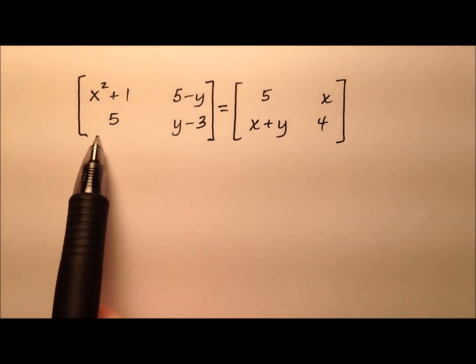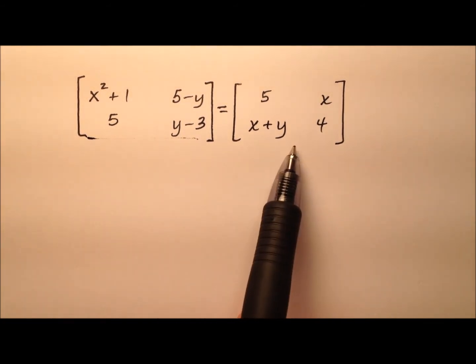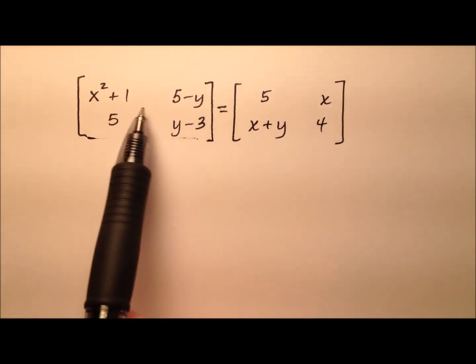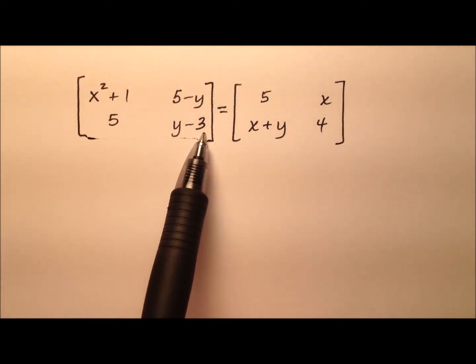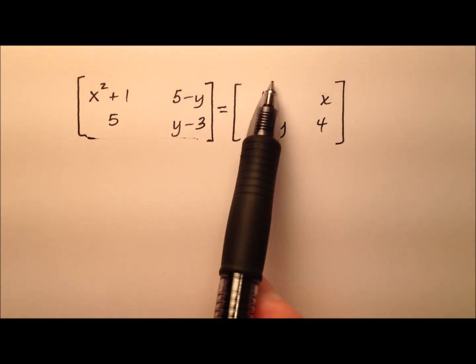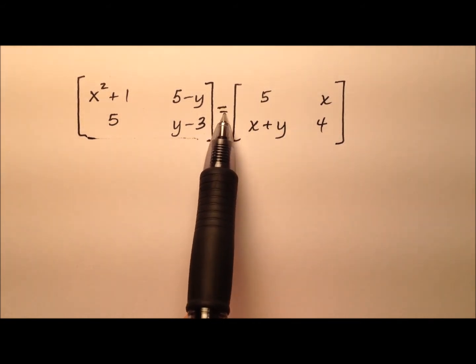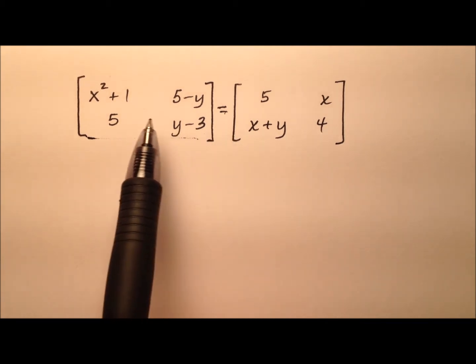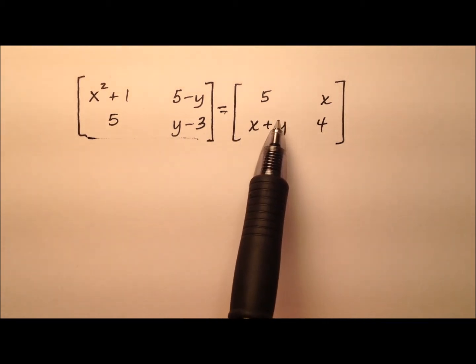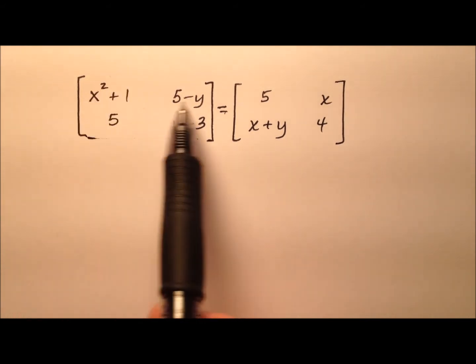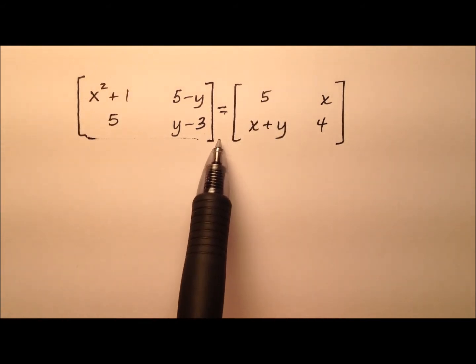In this example, we have a couple of square matrices that are going to be equivalent matrices. Each of these matrices has two rows and two columns, so the dimensions are two by two. Since we're saying they're equal to one another, what we know about equivalent matrices is that all of their corresponding entries are equivalent. So what we can do is set up a series of equations here.